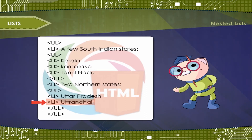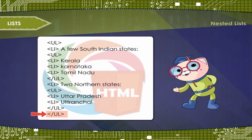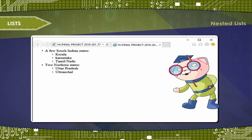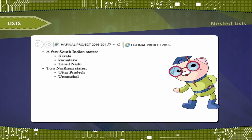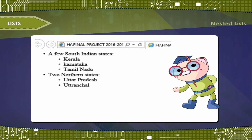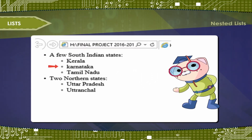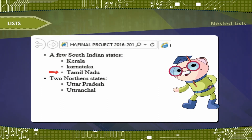The nested list is displayed as: A few South Indian states — Kerala, Karnataka, Tamil Nadu. Two northern states — Uttar Pradesh, Uttaranchal.